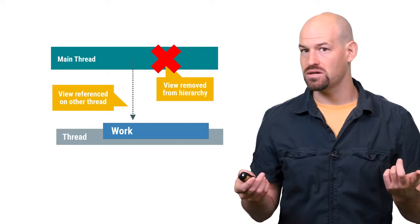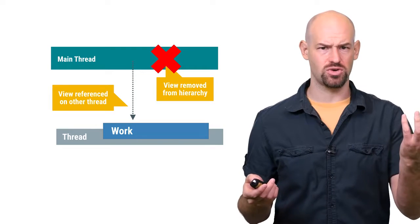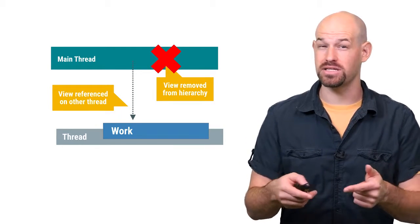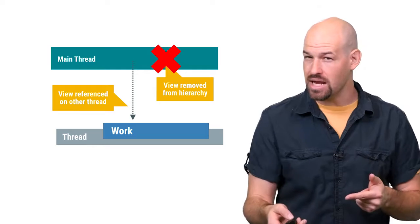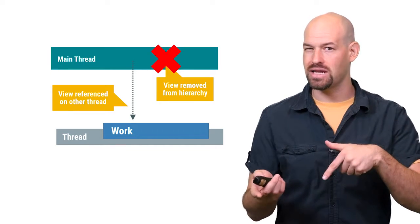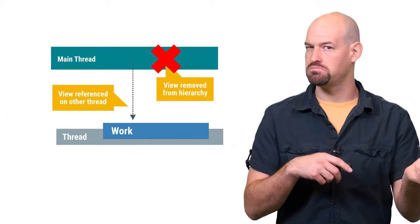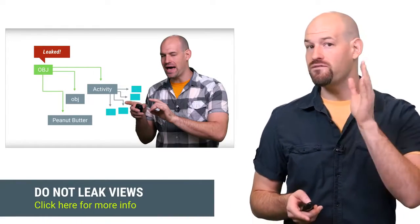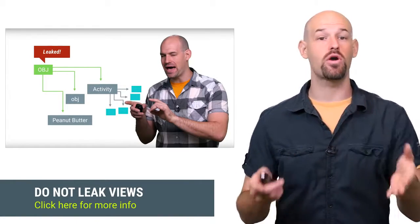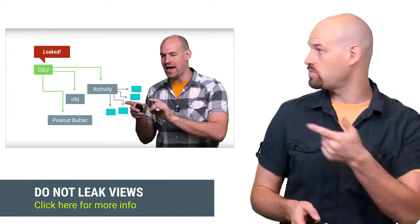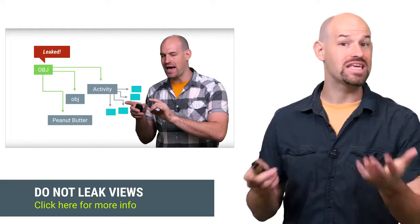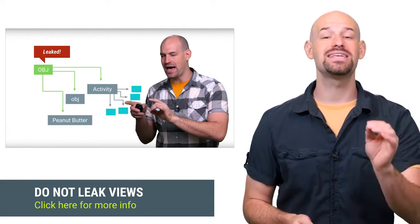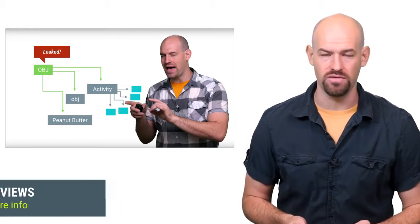So what do you do here? You can't trust any of the properties of that view since the data has changed. And updating those properties doesn't really mean anything since it's not part of the hierarchy anymore and won't be drawn to the screen. This gets crazy really quick. Remember, views contain references to their owning activity — we did a whole video on how leaking those views can cause all sorts of memory problems. But this gets even worse when threading is involved.